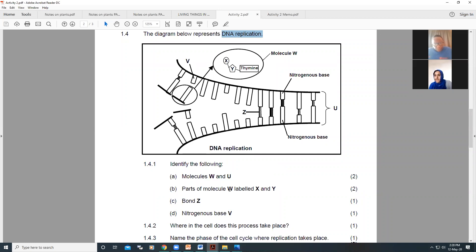Then 1.4.2. Where in the cell does this process take place? Which process is given to you in the stem of the question on the top? DNA replication. Where does it take place? And the nucleus is correct. And the clue would be where is DNA found? DNA is found in the nucleus, majority of it.